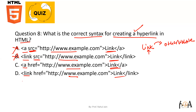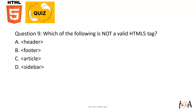Option D uses the link tag, but we create hyperlinks using the anchor tag, so option D is also wrong. Inside the anchor tag, we use the href attribute to refer to a third-party website when the link text is clicked. Therefore, option C is the correct answer for creating a hyperlink in HTML.